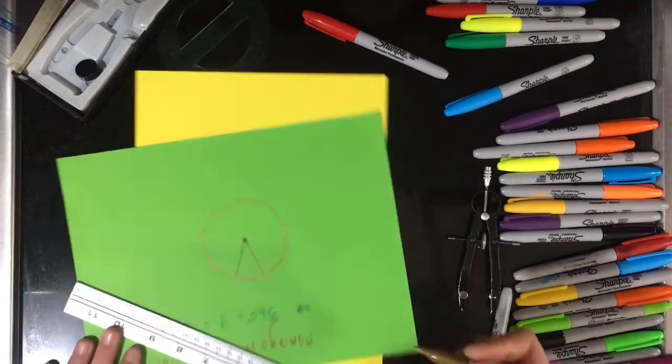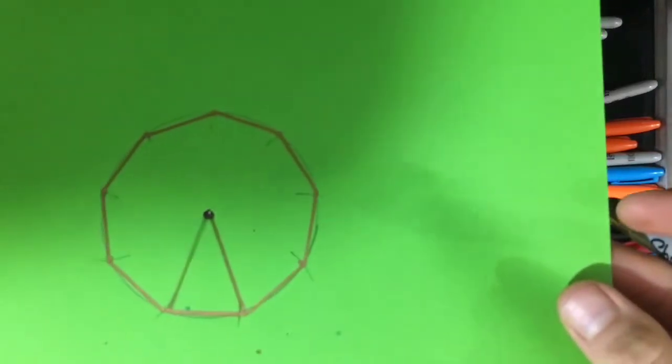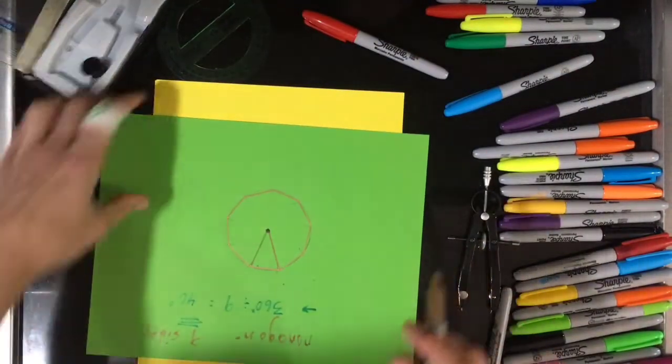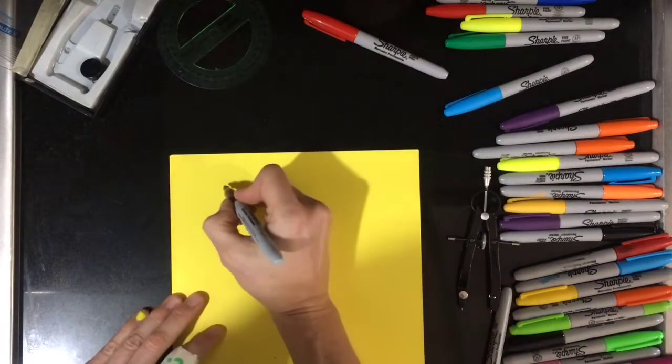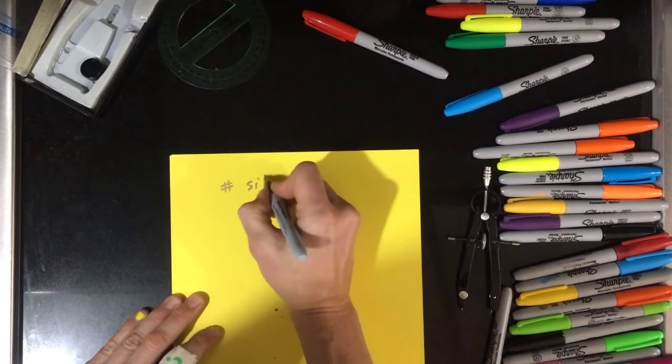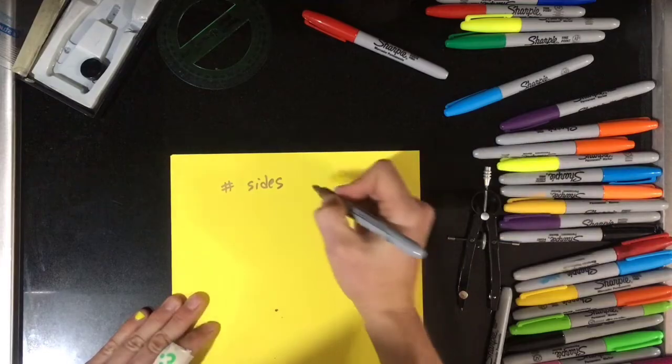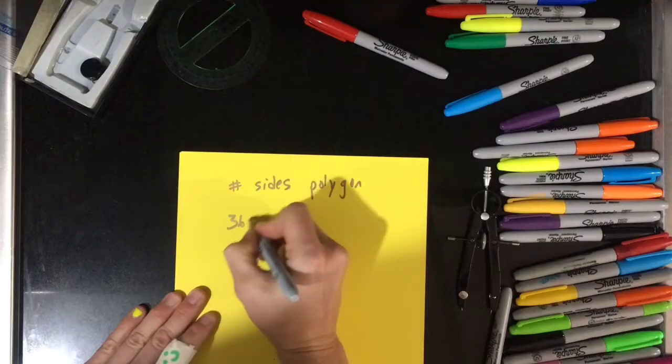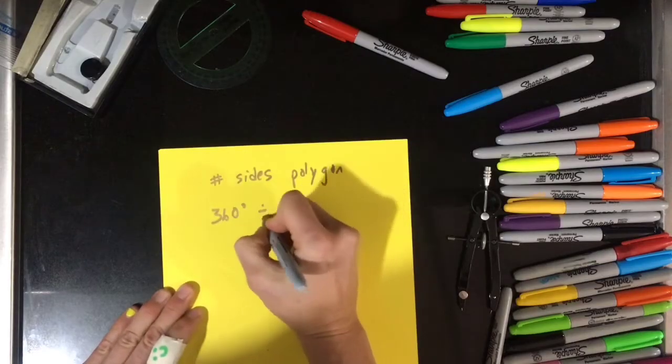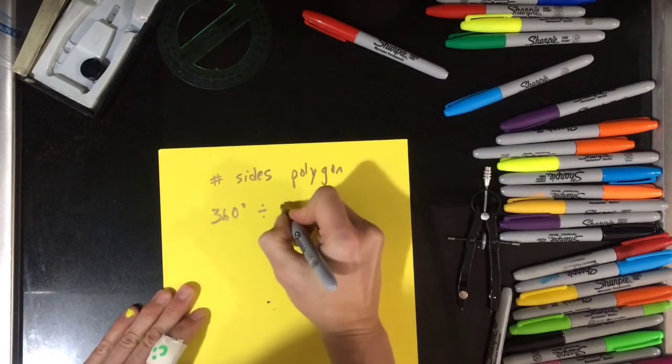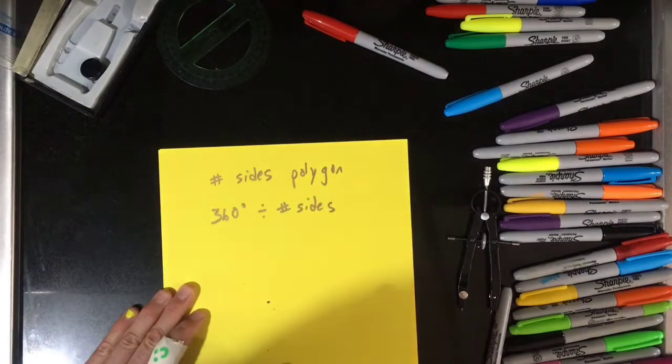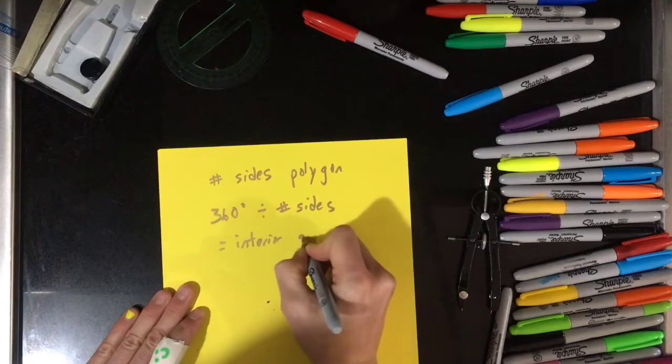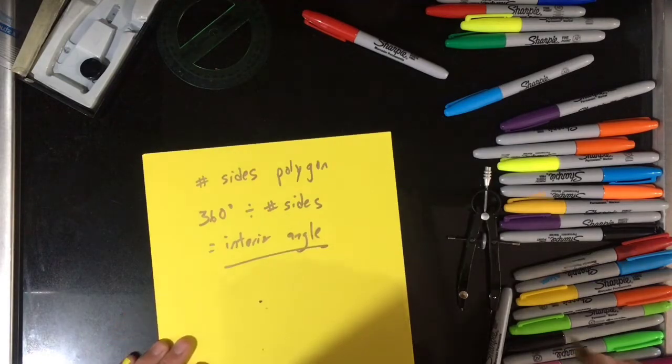And there you go, you have a perfect nonagon. So what are the steps again? The main steps are you want to find the number of sides of the polygon. You take 360 degrees, which is a full circle, and you divide it by the number of sides.